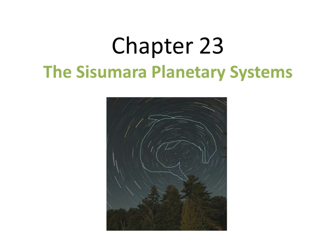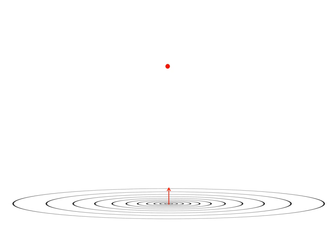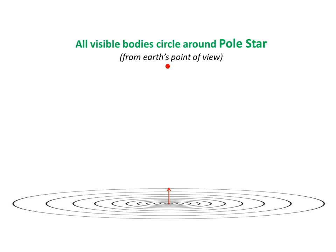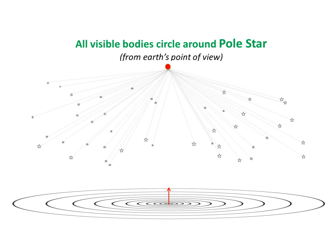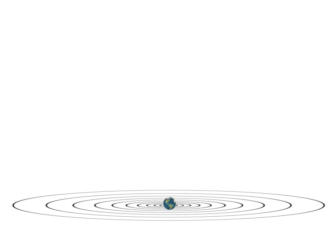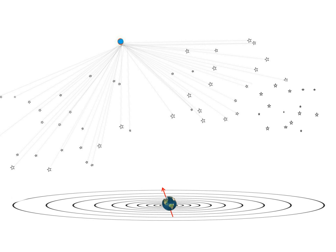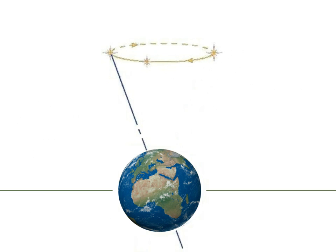That leads us on to Chapter 23, the Shishamara Planetary Systems. Imagine we're on the Earth there, looking up along that red line towards the pole star. All visible bodies circle around the pole star from Earth's point of view, and perhaps any given night we'll be able to see many, many stars. However, at present the Earth is not completely perpendicular to Brahmandala — it is tipped a little. That would place a pole star more like there. We understand that over a long period of time, over 26,000 years, there's a full cycle where the pole stars change.